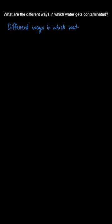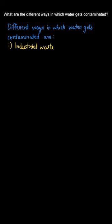The first one is industrial waste. The second one is sewage waste. And the third one is agricultural chemicals. Now let us understand each one of them in detail.